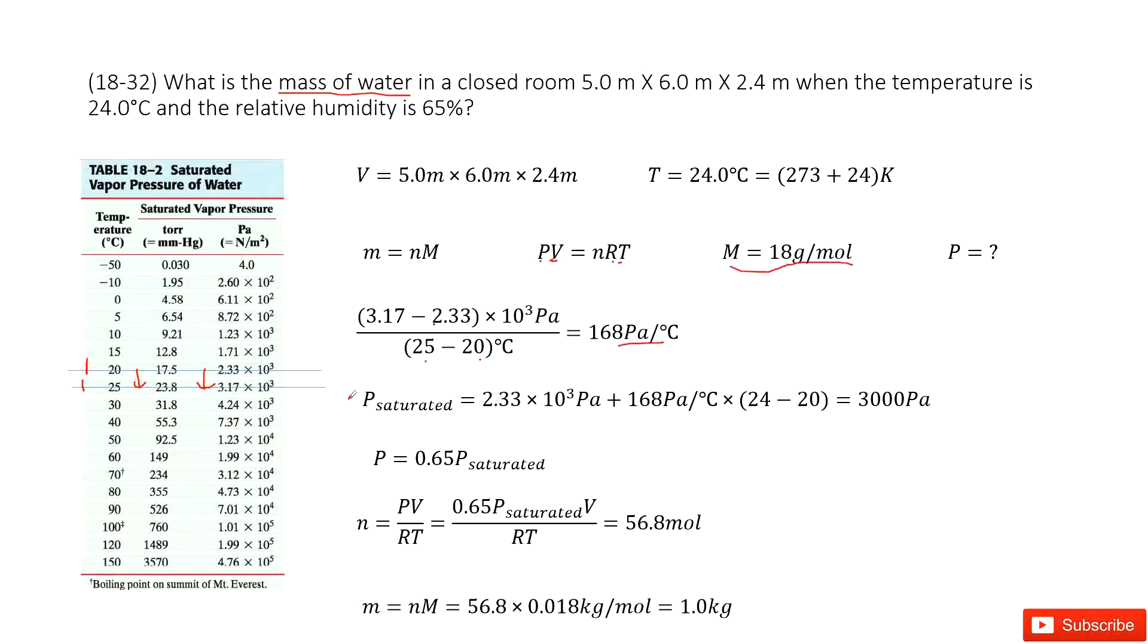We can see the initial is 2.33, we write it there as 2.33 times 10³ Pa, so 2330 Pa. This is initial plus the slope times the difference for the temperature, right?